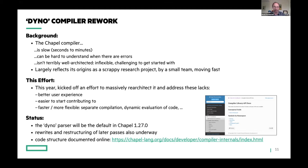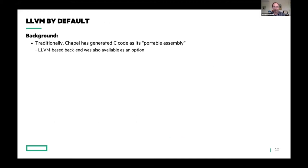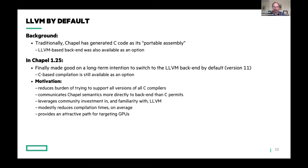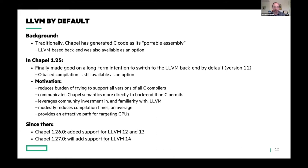The second compiler improvement: we've traditionally used C as our back end, generating C code as our portable assembly. There's been an option to use LLVM as the back end, but that hasn't been the default. We finally changed that in Chapel 1.25, so today LLVM is the preferred and default back end compiler, although C-based compilation is still available. One key reason is reducing our maintenance burden across C compiler versions. LLVM also provides a very attractive path for targeting GPUs. Since Chapel 1.25, we've added support for LLVM 12, 13, and now LLVM 14 in this month's release.